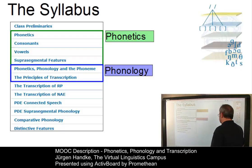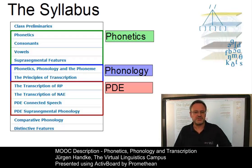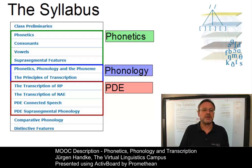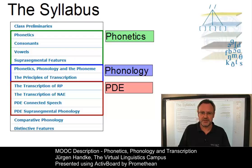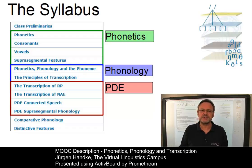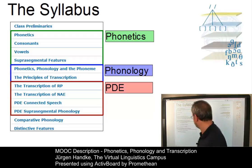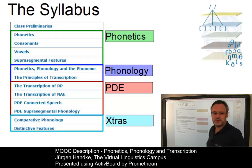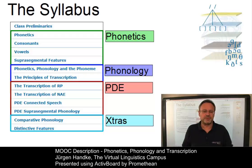The concept of the phoneme and variance of phonetic transcription. In the third part of the class, these concepts will be applied to present-day English. We will look at the sound system of central British English accent received pronunciation and at that of North American English, and will then discuss aspects of connected speech and suprasegmental present-day English phonology. Finally, we will introduce two more general topics: comparative phonology and the theory of distinctive features.